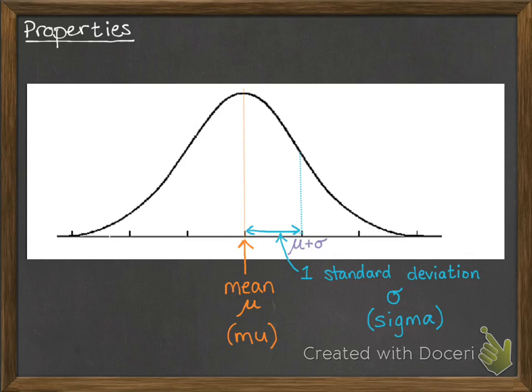So that position on the scale will be mu plus sigma, so we're one standard deviation above the mean. On the other side, it would be mu minus sigma, one standard deviation below the mean.